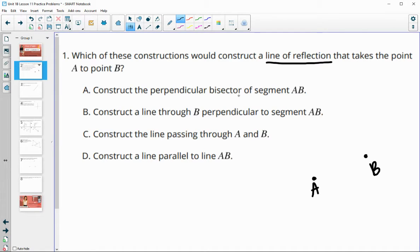Construct a perpendicular bisector of segment AB. Construct a line through B perpendicular to AB. Construct a line passing through A and B. Or construct a line parallel to line AB.